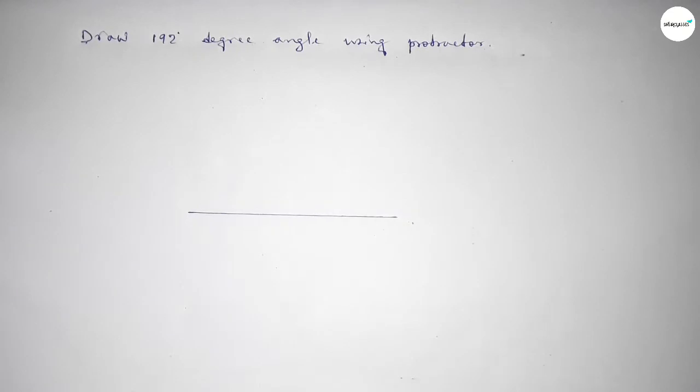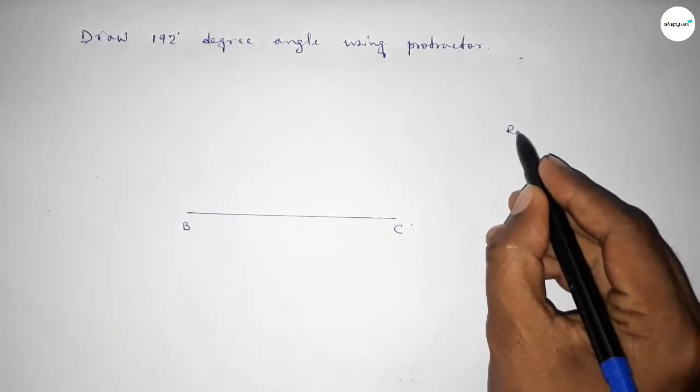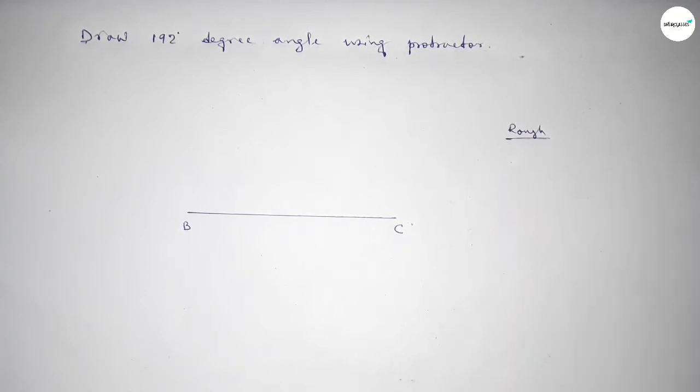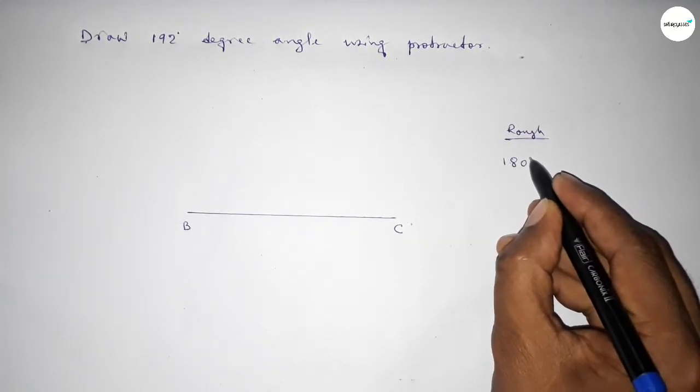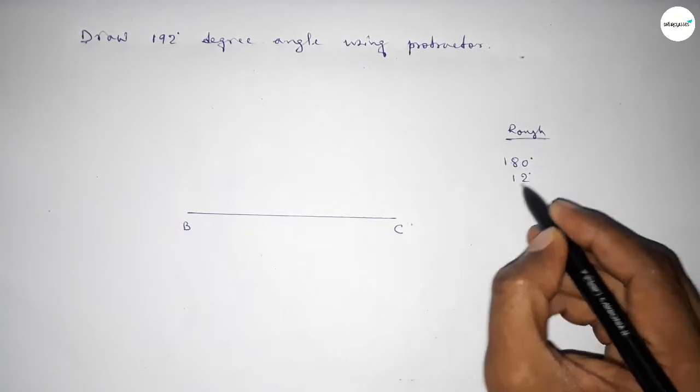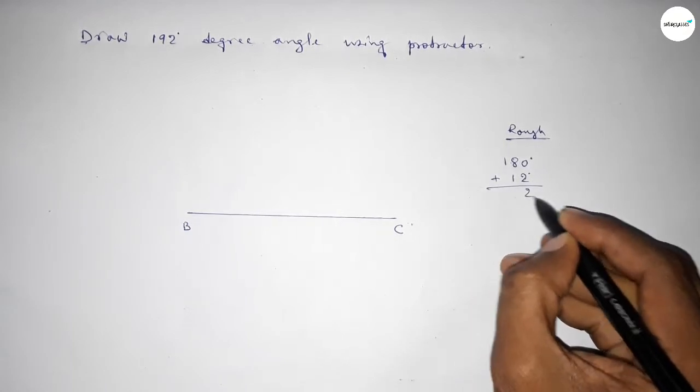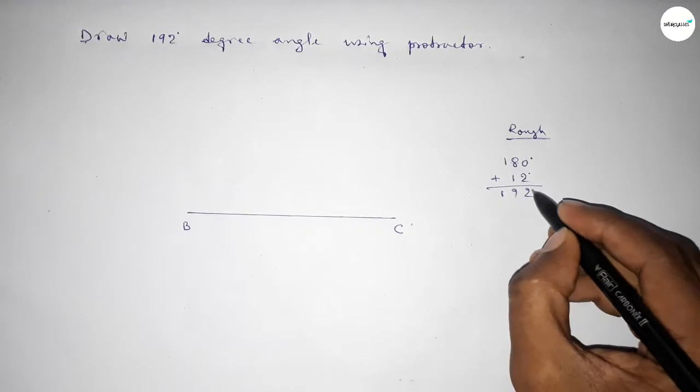So first drawing here a line and taking here B point and here C point. Now roughly discussing here some calculation. So if you add 12 degree angle with 180 degree, then we can get 192. So this is 192.